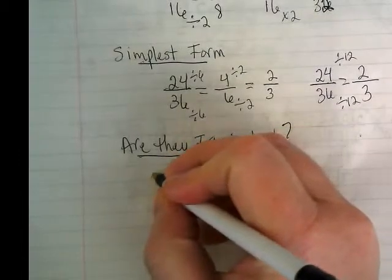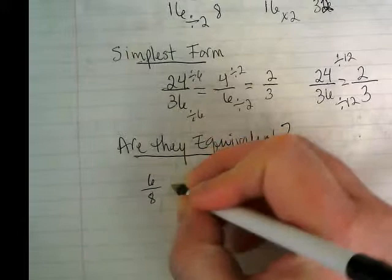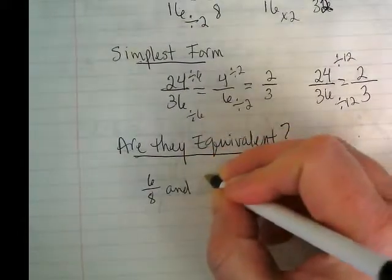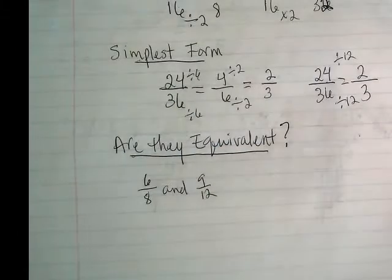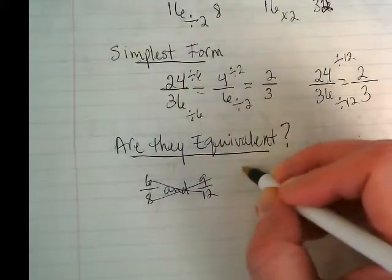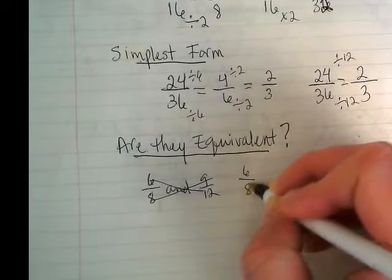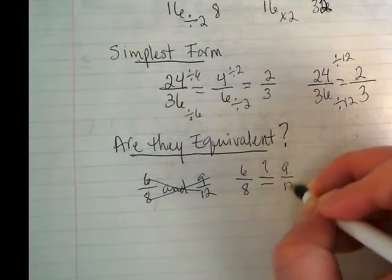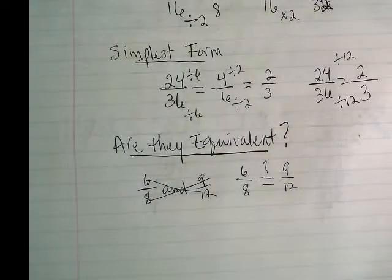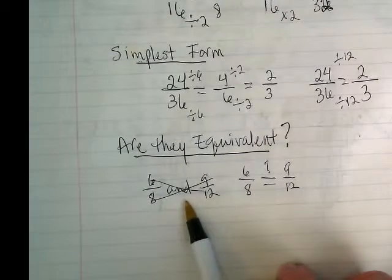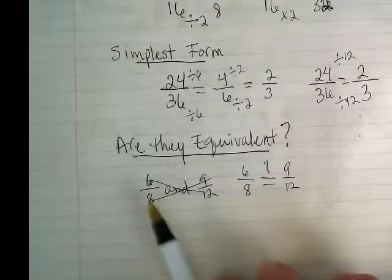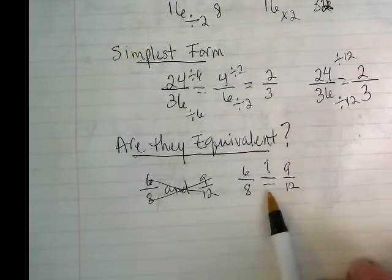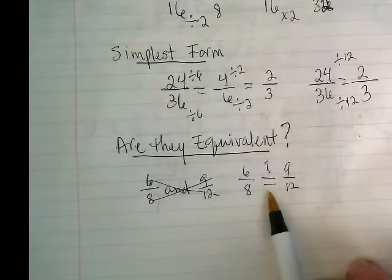Now our book writes it like this. I don't like to do that. I like to write it like this, and I put a question mark here. Because that's really what I'm questioning. And when I see the word 'and', I want to add things together. And we're just checking to see if these two are equivalent. So I'd prefer it if you guys used an equal sign with a question mark.